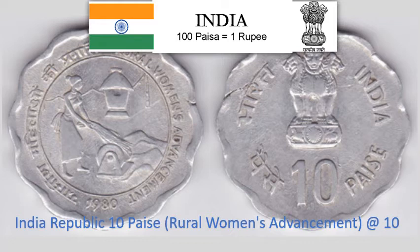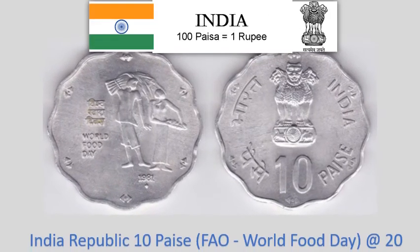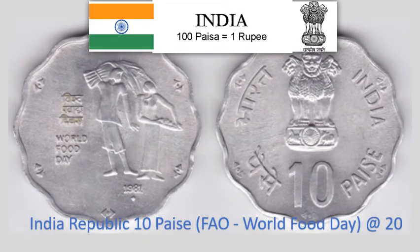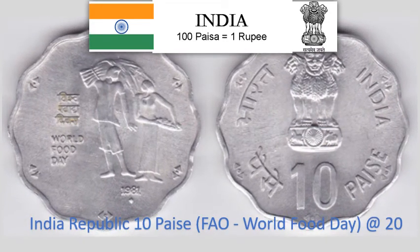India Republic 10 Paise 1980 — Circulating Commemorative Coin, Rural Women's Advancement. 2.3 gram Aluminium scalloped coin with 12 notches, 26 mm diameter. Krause Reference No. 35. Approximate market value Rs. 10.